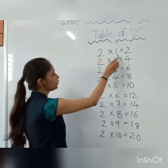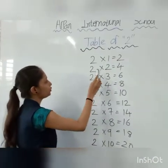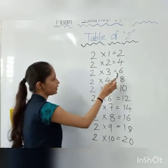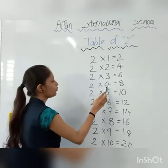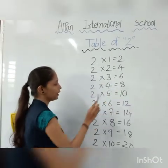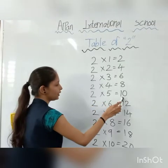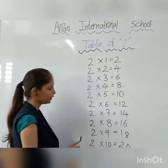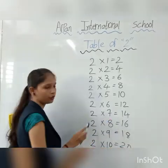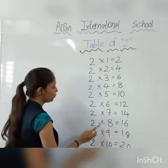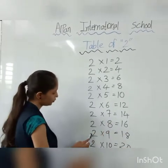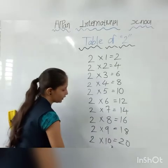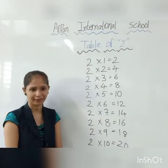2, 1's are 2. 2, 2's are 4. 2, 3's are 6. 2, 4's are 8. 2, 5's are 10. 2, 6's are 12. 2, 7's are 14. 2, 8's are 16. 2, 9's are 18. 2, 10's are 20. Thank you.